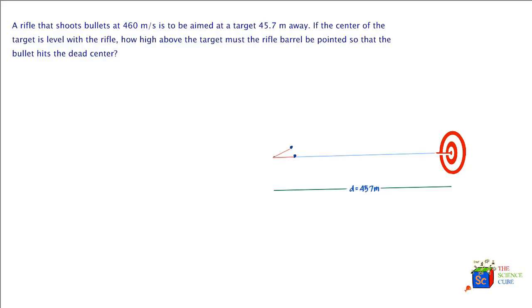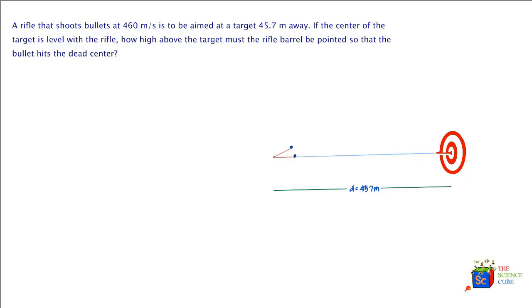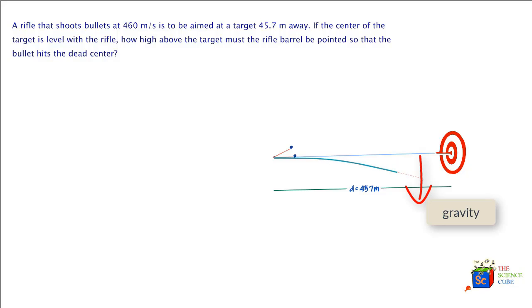Let's try to understand the problem. There's a target, the bull's eye, and there's a rifle aligned with the center of the bull's eye in a straight line. If a bullet is fired at a velocity of 460 meters per second from this rifle, which is about 45.7 meters away from the target, the bullet would take a trajectory like this — it'll tend to go down as it approaches the target and therefore miss the target.